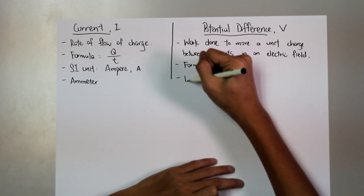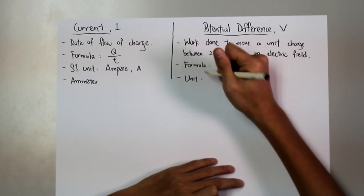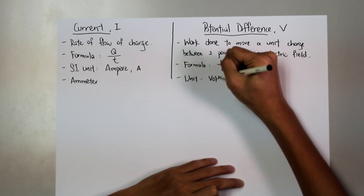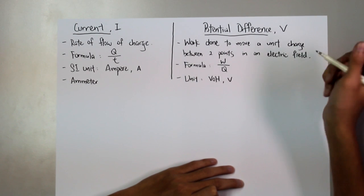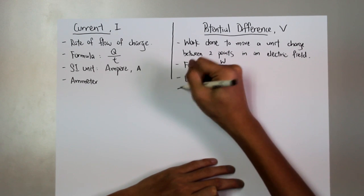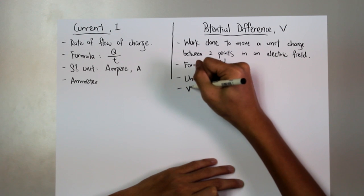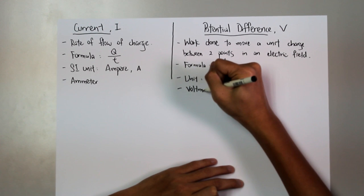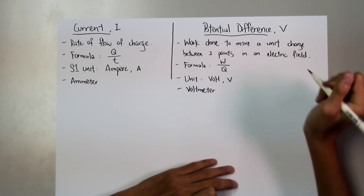The unit we use for potential difference is V, and the apparatus we use to measure potential difference is the voltmeter.